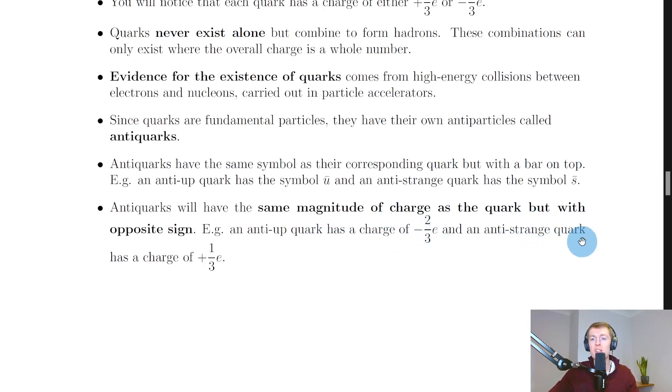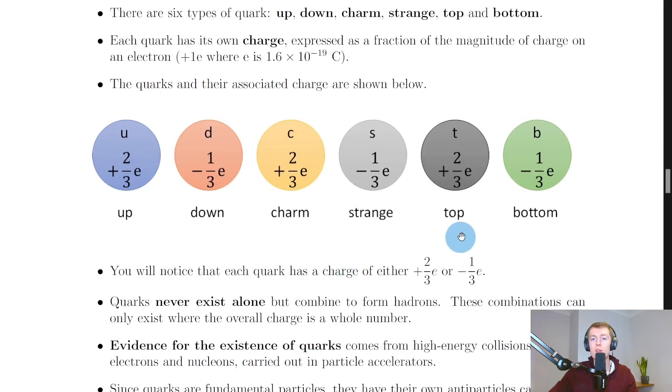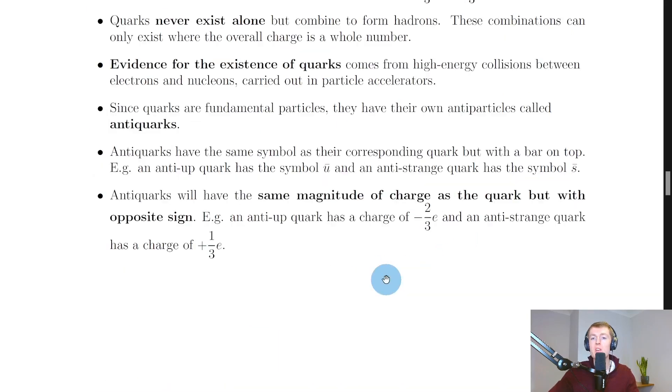For the anti-strange quark, we can look at the strange quark first, which has a charge of minus one-third e, so that means the anti-strange quark must have a charge of plus one-third e. Antiquarks have the same magnitude of charge as their corresponding quarks but with the opposite sign.